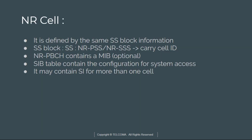The new radio cell is defined by the same SS block — synchronization signal block — information. This SS block carries the new radio primary synchronization signal and new radio secondary synchronization signal. Both of these carry the cell ID.